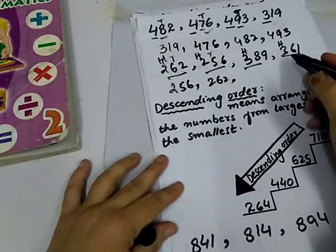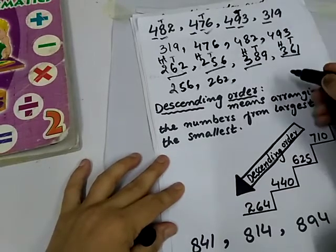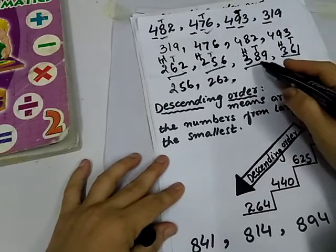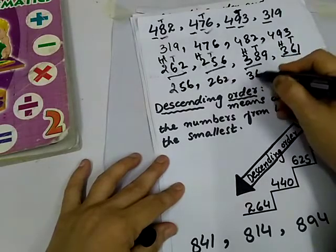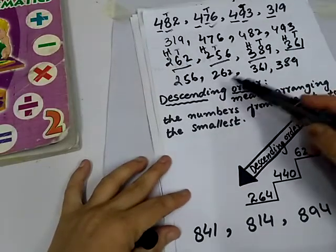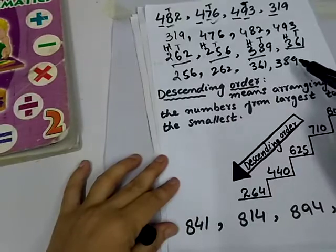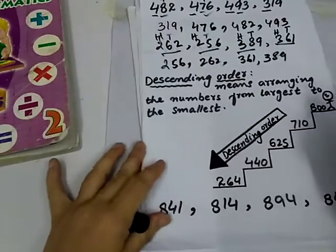Now, check 300, 300 place value of 10. 8, 10 and 6, 10. And 6 is smaller than 8. So, write 361 and 389. These numbers are arranging in ascending order. Any smallest to the greatest. Now, check descending order.